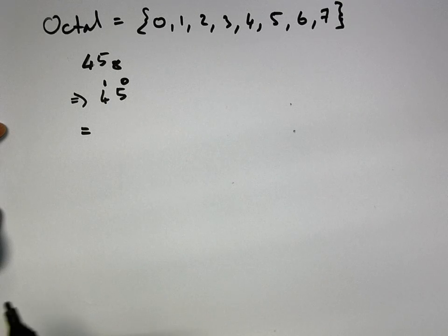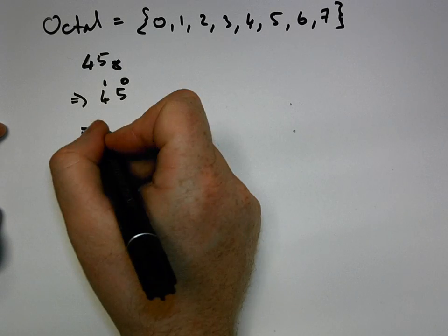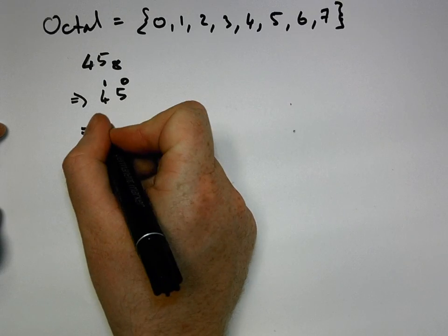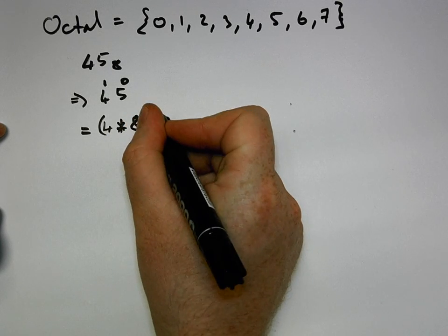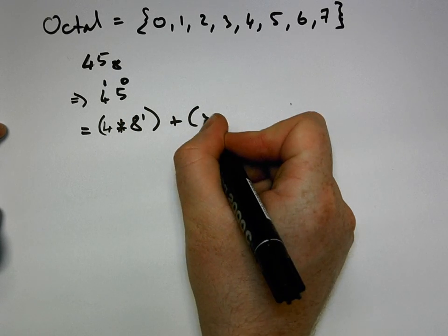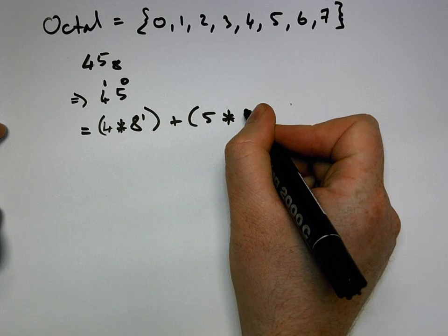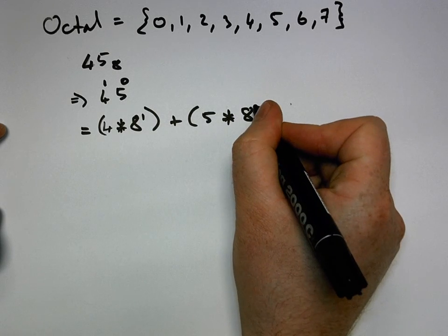It's a simple expansion process into the decimal alphabet. We say 4 multiplied by the base of octal, which is 8, raised to the power of 1, plus 5 multiplied by the base, which is 8, raised to the power of 0.